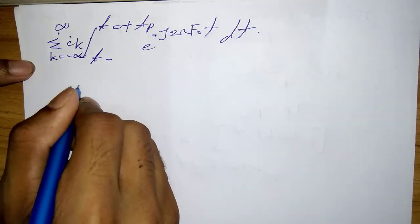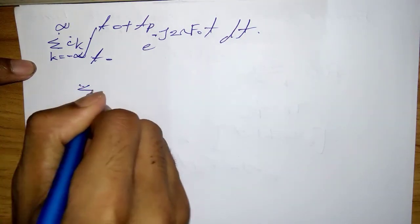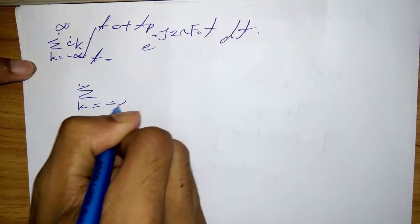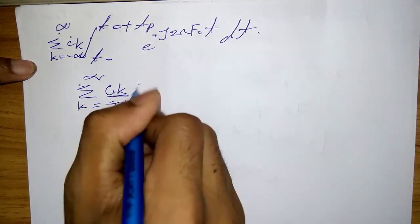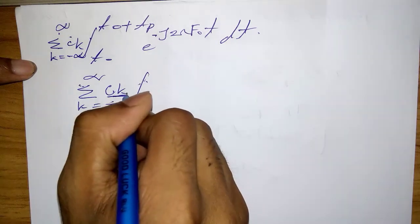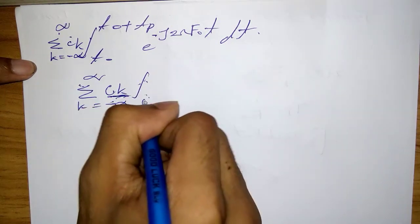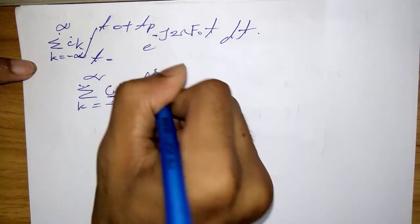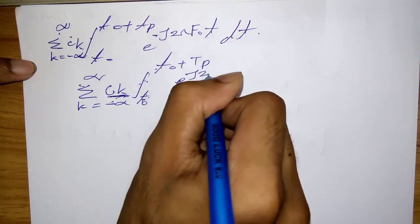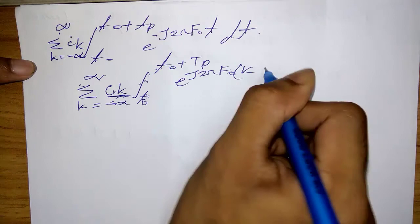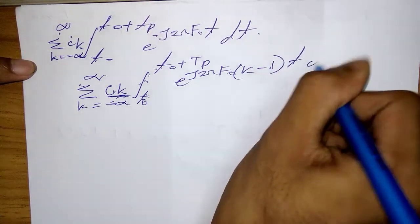Hence, the equation becomes: Σ(k=-∞ to ∞) c_k times the integral from t₀ to t₀+T_p of e^(j2πf₀(k-l)t) dt.